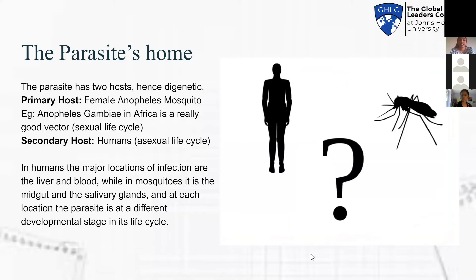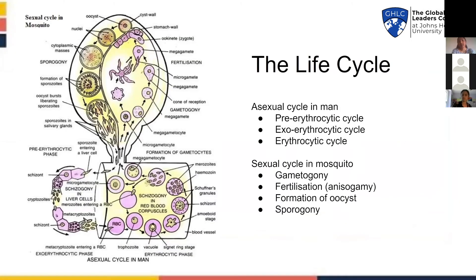Where exactly is the parasite's home? The parasite requires two hosts to complete its life cycle, hence it's digenetic. Its primary host is the female Anopheles mosquito, and the secondary host is humans. Based on which host the parasite is in, it has two different cycles: asexual or sexual cycles.